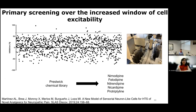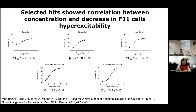The five hits were nimodipine, felodipine, nitrendipine, nicardipine, and protriptyline, which counteracted this increase in cell hyperexcitability. We confirmed that those hits elicited a dose-dependent response with an EC50 around 1 micromolar.